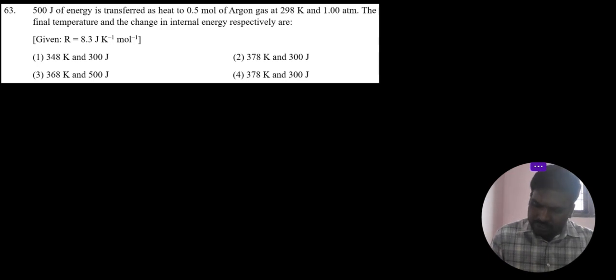So here first we can calculate final temperature. The formula: heat at constant pressure Qp equal to n Cp delta T.